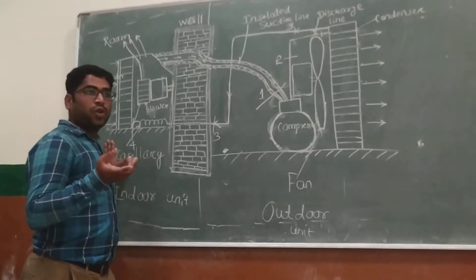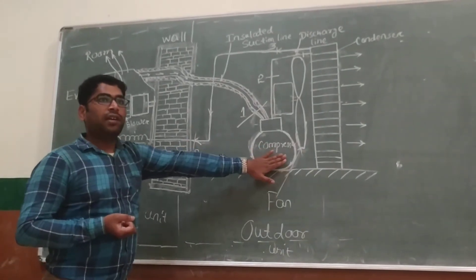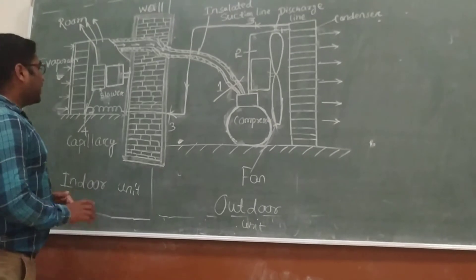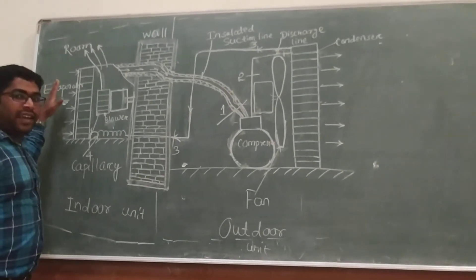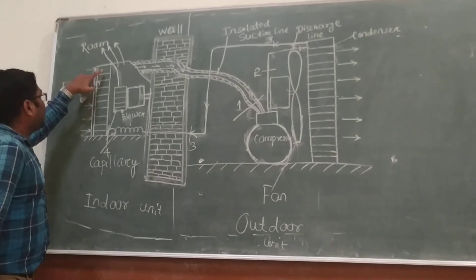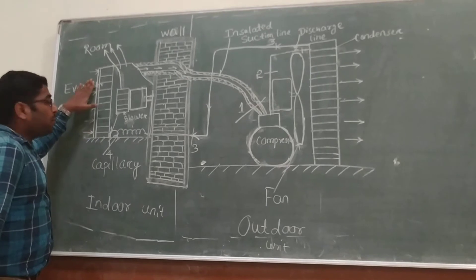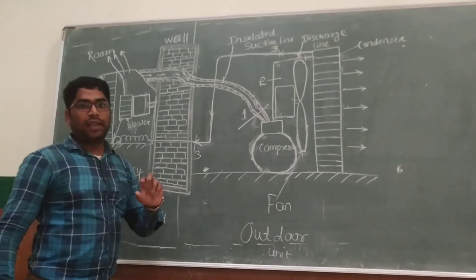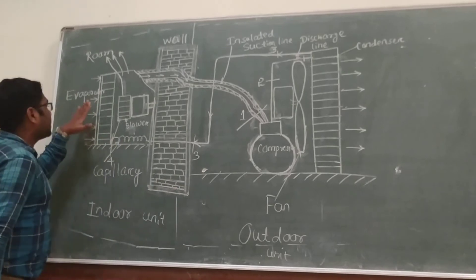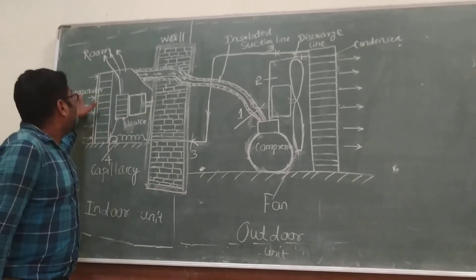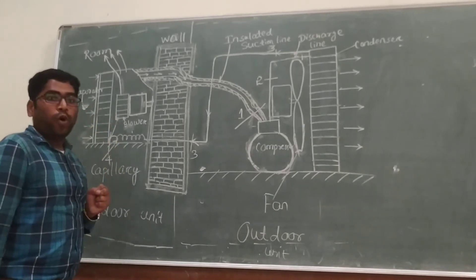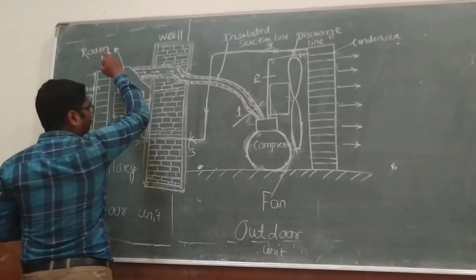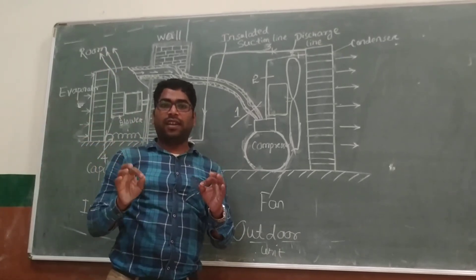The indoor unit is also called the cooling unit, and the outer unit is also called the condensing unit or condenser unit. When outside air enters and passes through the evaporator coil, that air is converted into cool air. The evaporator coil cools the air and the blower then blows that cooled air into the room.